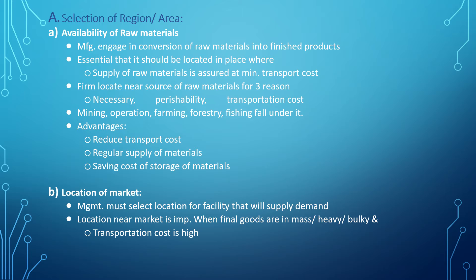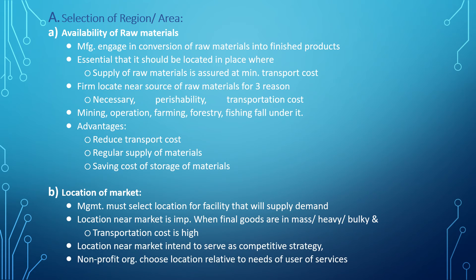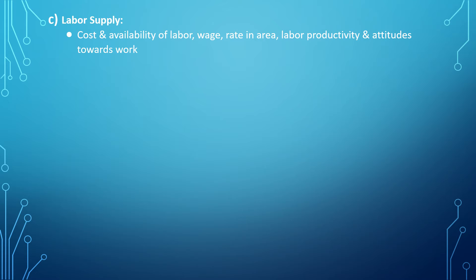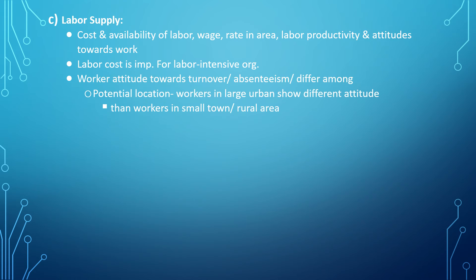Regarding location of the market, management must select a facility location that will supply the demand. Location near the market is important when final goods are heavy, bulky, or transportation cost is high. Proximity to market serves as a competitive strategy, and non-profit organizations choose locations relative to the needs of service users. For labor supply, cost and availability of labor, wage rates, labor productivity, and work attitudes are critical, especially for labor-intensive organizations.